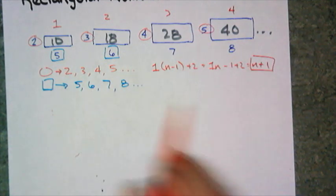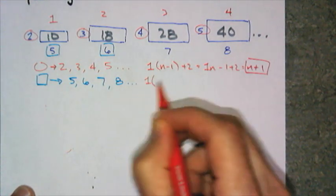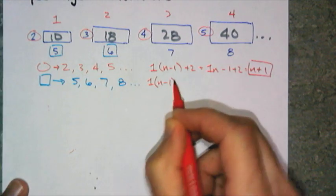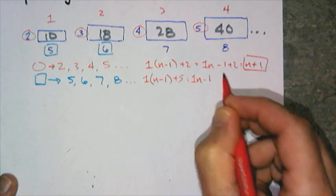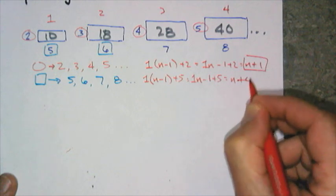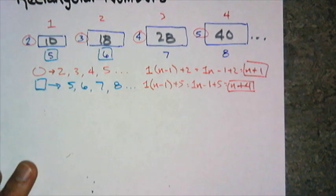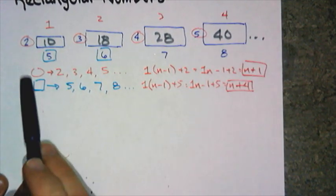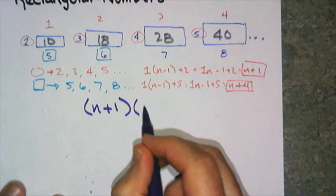Now, 5, 6, 7, 8. Using what we just did, how far am I off? It's 1 n, right? I'll do it the long way. 1 times n minus 1 plus 5, which is 1n minus 1 plus 5, which is equal to n plus 4. And yes, I am 4 off. The sequence, the rectangular sequence now, is nothing more than the circles multiplied by the squares or n plus 1 times n plus 4.